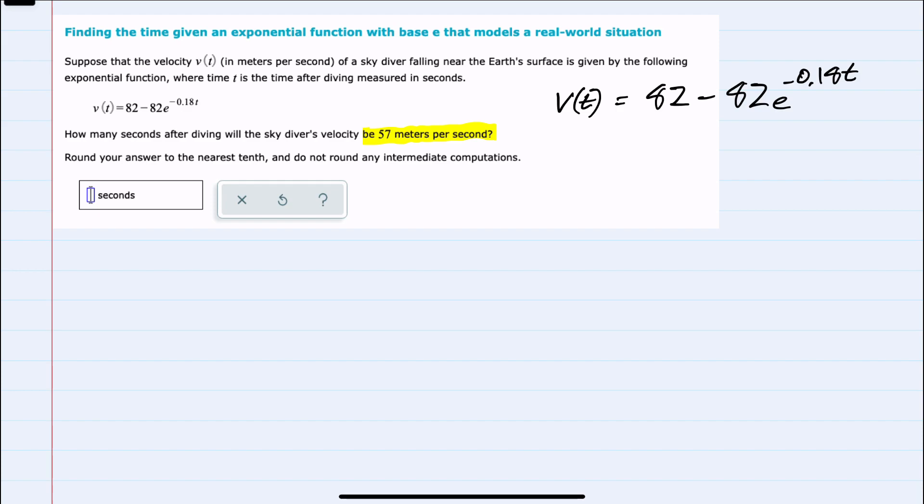So we know the velocity at this point v of t will be 57. Substituting in, we have an expression that we need to solve for time.